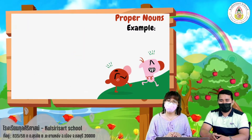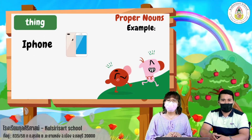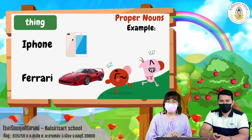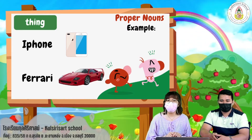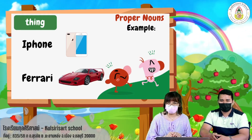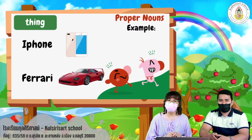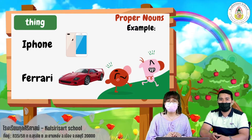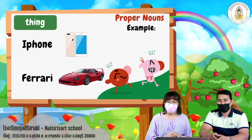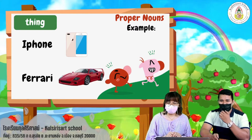Next example, thing — first, iPhone, and next, Ferrari. The name iPhone starts with a big letter I, and the name Ferrari starts with a big letter F.